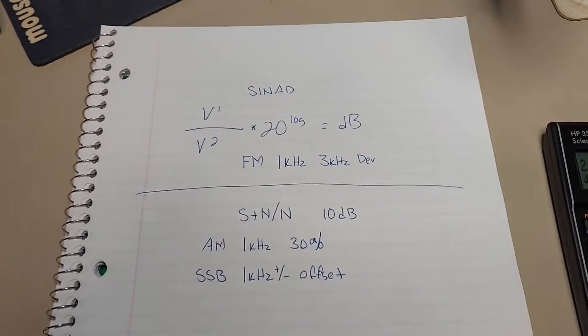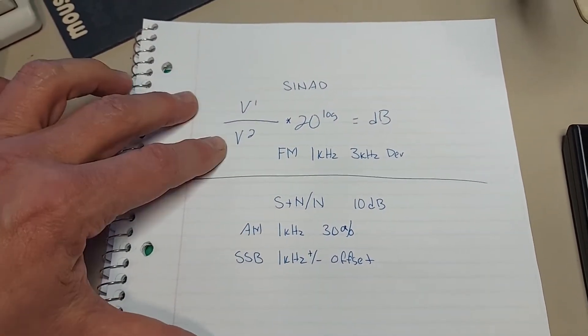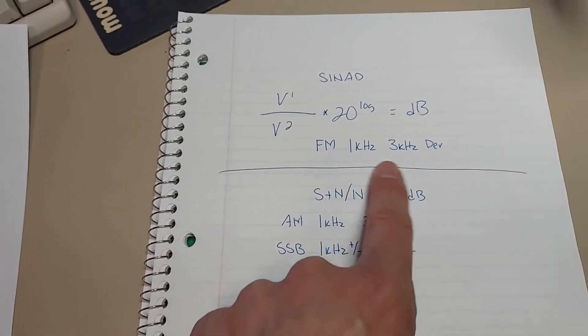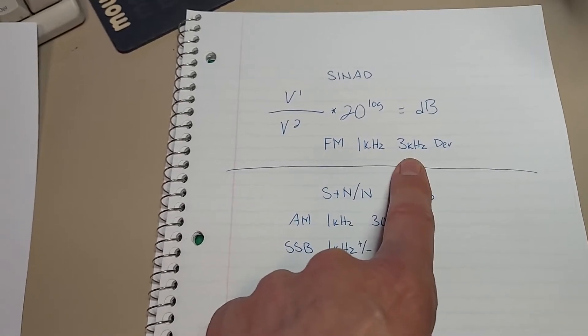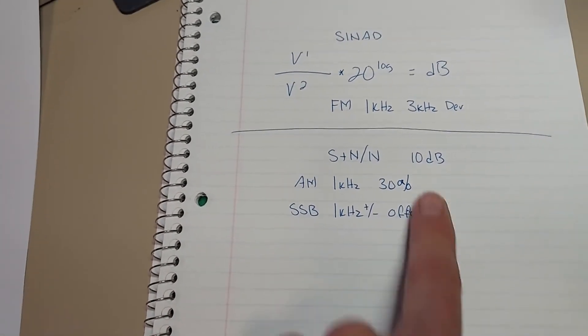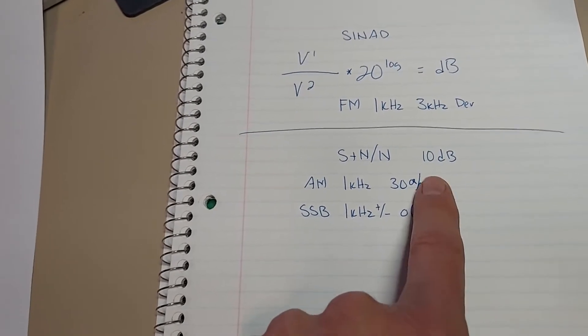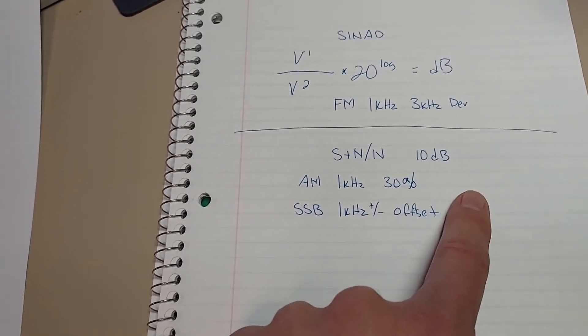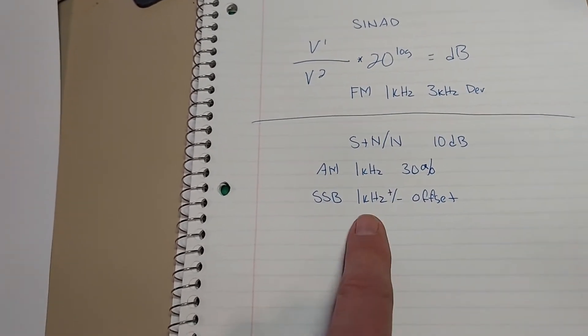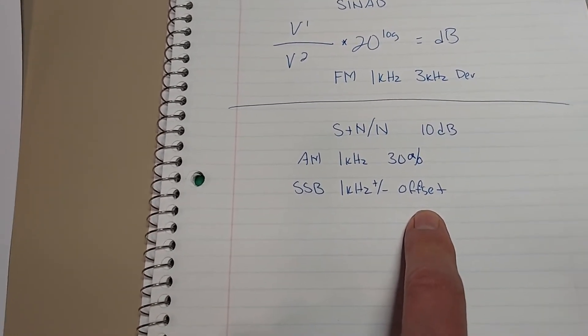But before I forget, I just wanted to show you the formulas that I'm using here to determine all of this. For SINAD it's your first voltage over your second voltage, you take the logarithm of that, multiply it by 20, and that gives you your dB. Your parameters here - for FM, one kilohertz tone with three kilohertz of deviation. For signal plus noise over noise to gain 10 dB output at the speaker for AM: one kilohertz tone modulated at 30 percent depth, and then you crank up your output to achieve this setting here. That'll give you the sensitivity for AM. Sideband's a little different - you don't need the kilohertz tone at 30 percent, you just offset the carrier coming out of the signal generator to generate the one kilohertz offset or tone by offsetting from sideband.